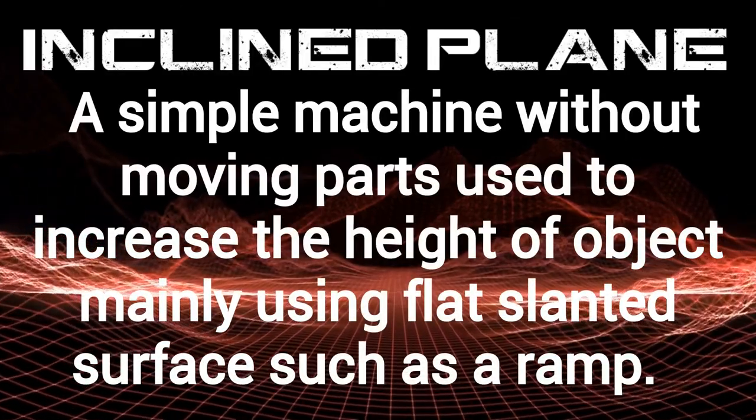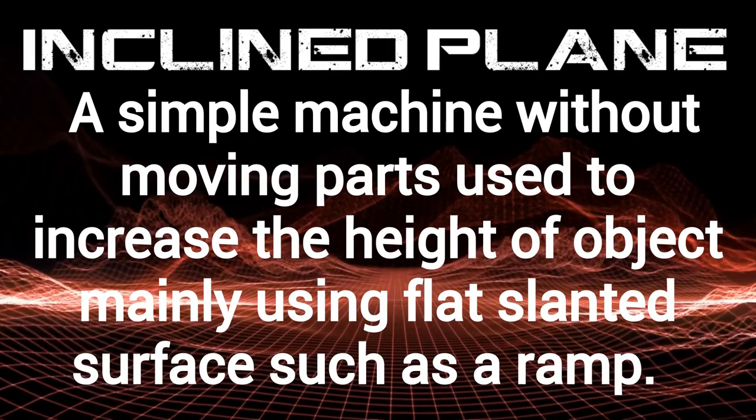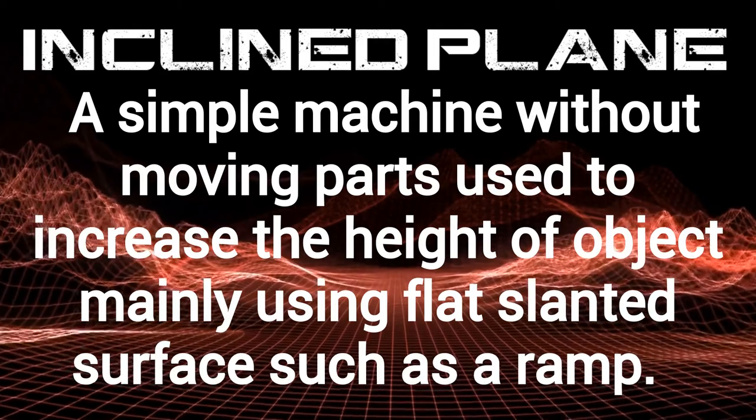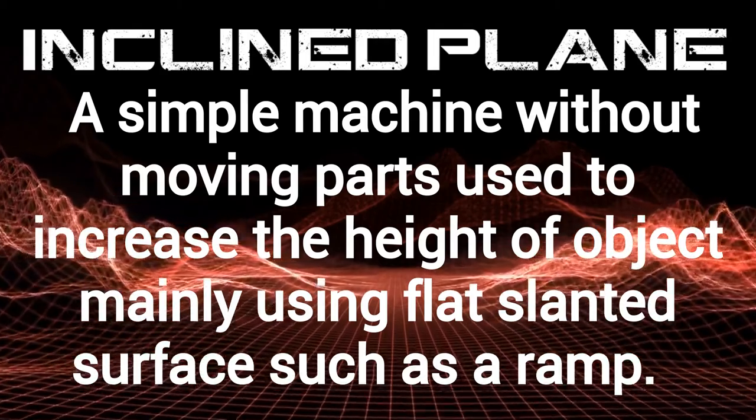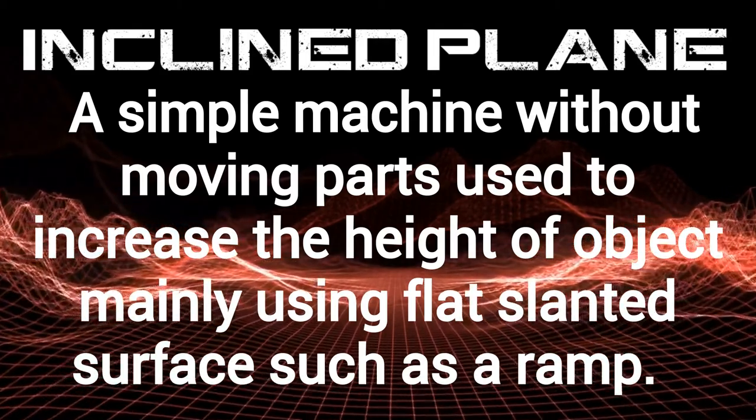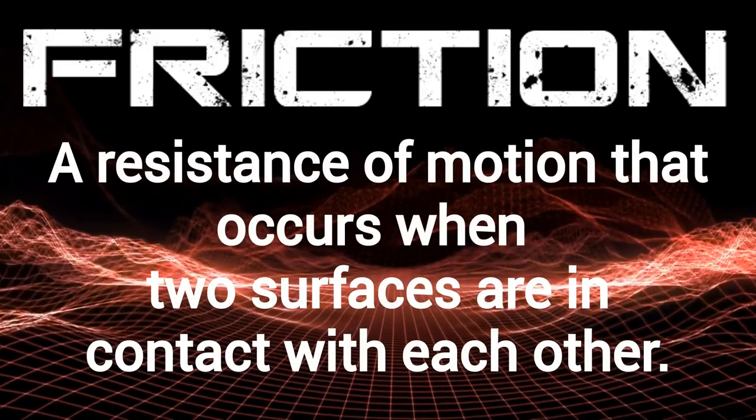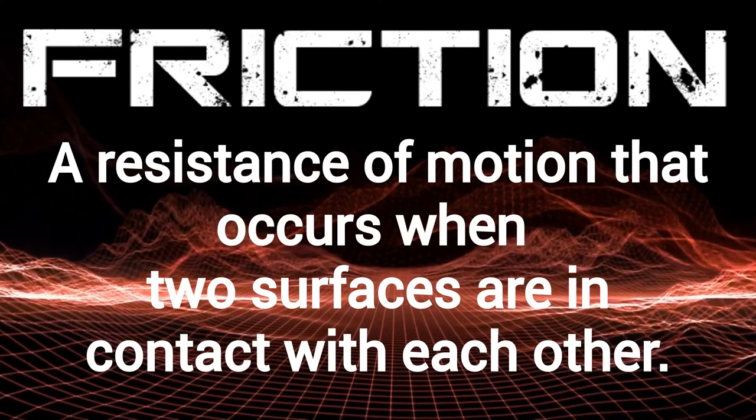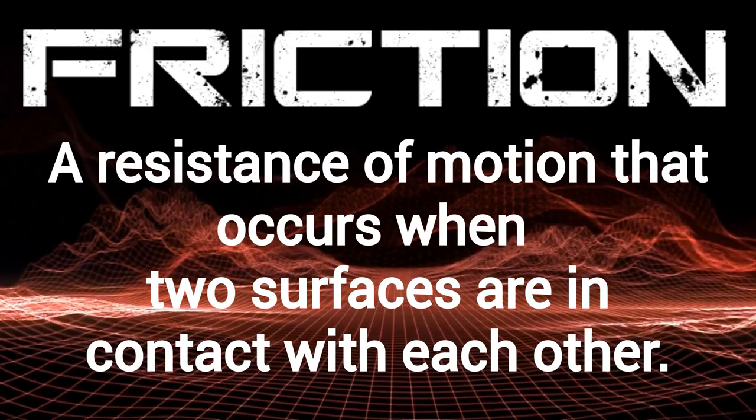Incline plane: a simple machine without moving parts used to increase the height of objects, made using a flat slanted surface such as a ramp. Friction: a resistance of motion that occurs when two surfaces are in contact with each other.